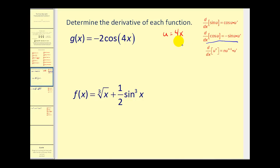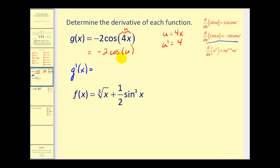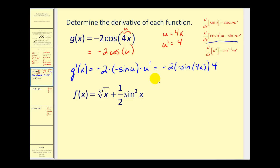Let's go ahead and record this. As soon as we know we have a u, we need to find u prime. U prime is the derivative of 4x, which equals 4. We should view this as negative 2 cosine u. So g prime of x equals negative 2 times the derivative of cosine u, which is negative sine u times u prime. Replacing u with 4x and u prime with 4, our final derivative is positive 8 sine 4x.